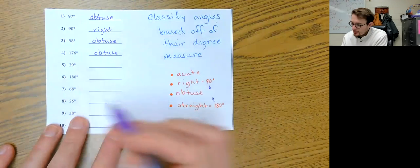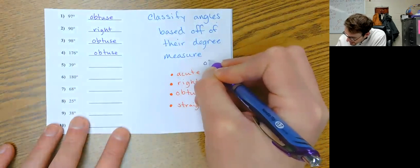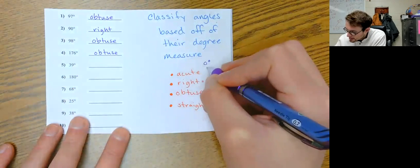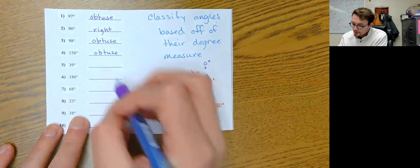This one is between - let's say we got zero degrees up here, which is not an angle at all - so between 0 and 90 is acute. So this one would be acute.